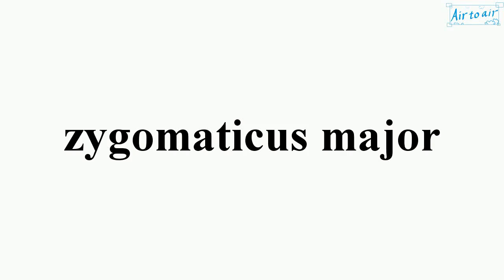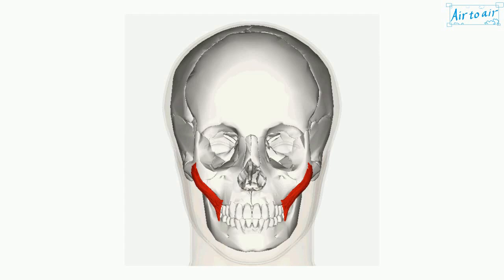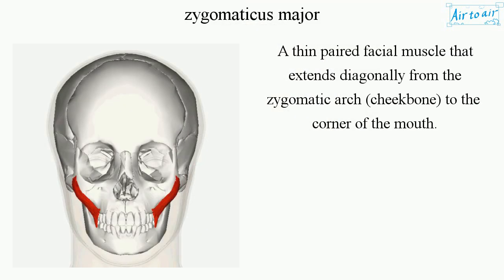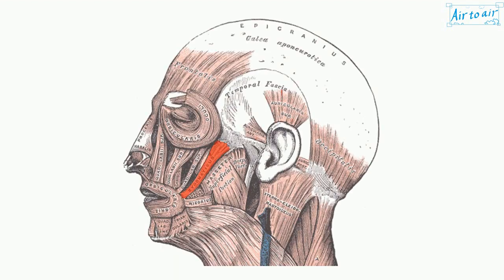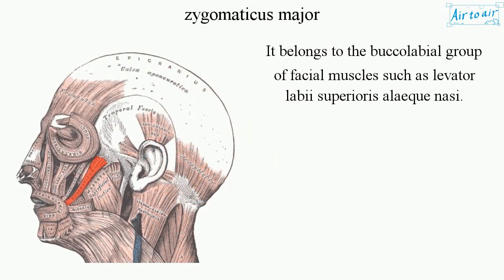Zygomaticus major. A thin paired facial muscle that extends diagonally from the zygomatic arch to the corner of the mouth. It belongs to the buccolabial group of facial muscles, such as levator labii superioris alaeque nasi.